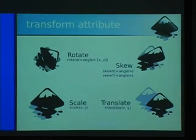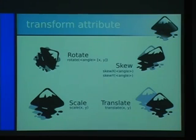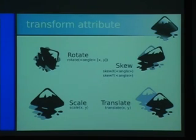In SVG there's a transform attribute that can be applied to any element, groups, or the whole document. The most useful transforms are rotate, skew, scale, and translate. This attribute has its own syntax — you can chain multiple transforms with spaces between them, as many as you'd like. Scale takes x, y. Translate takes x, y, where y can be left off if you don't need to translate in that direction. There's also a matrix operator if you prefer doing matrix math the old-fashioned way, letting you specify any transformation directly.